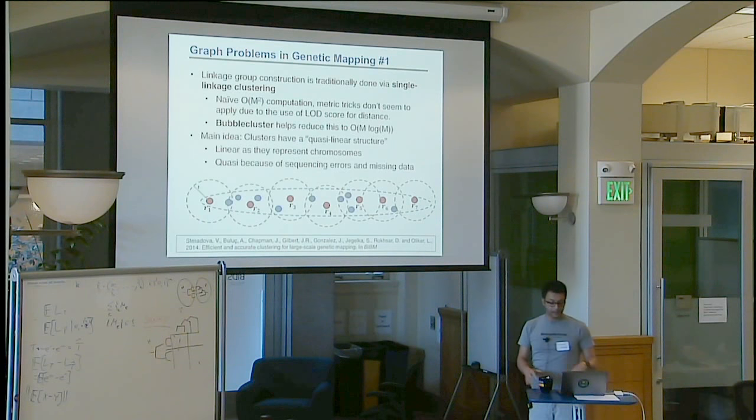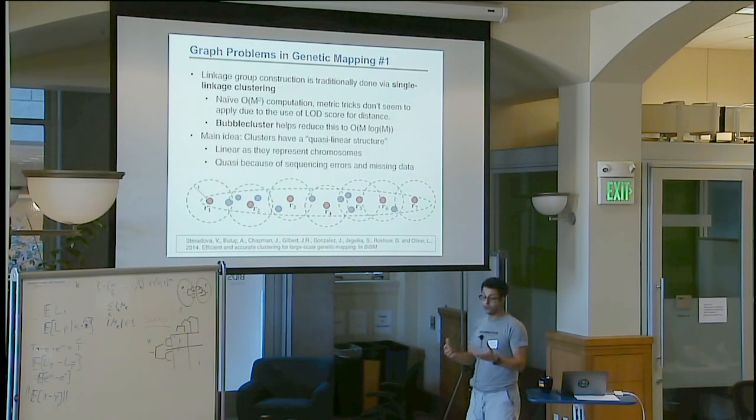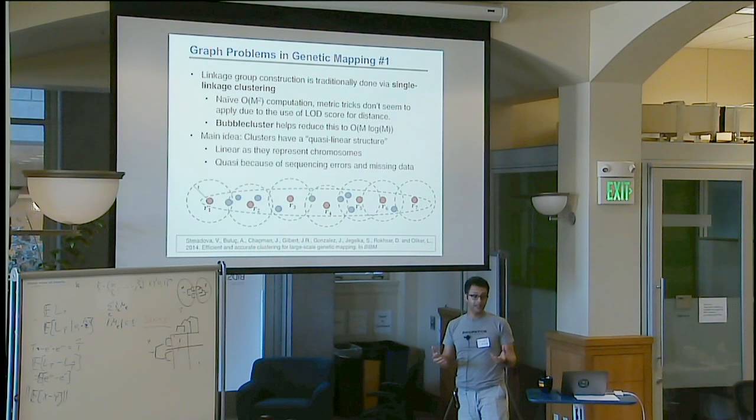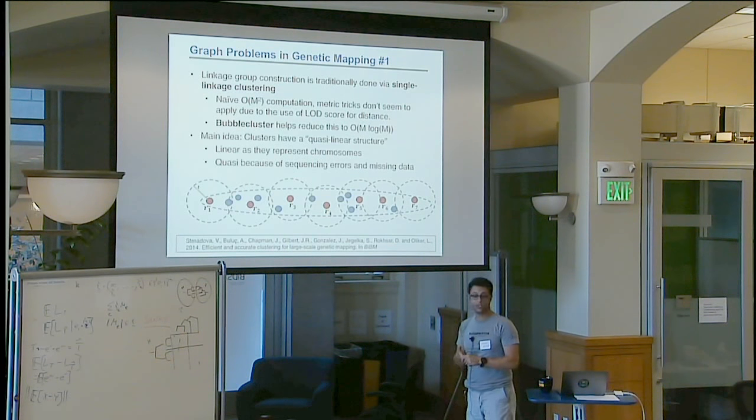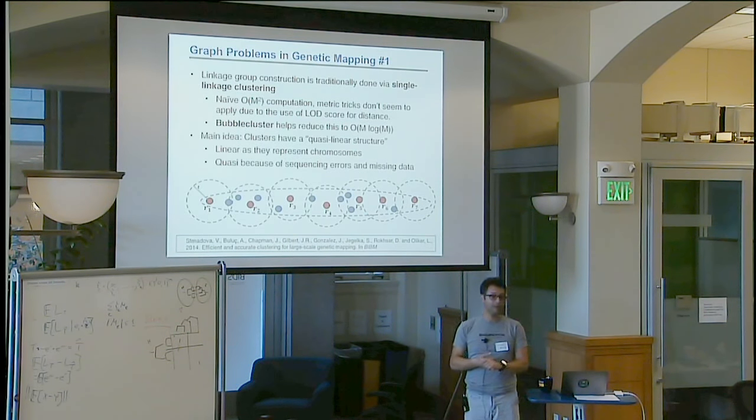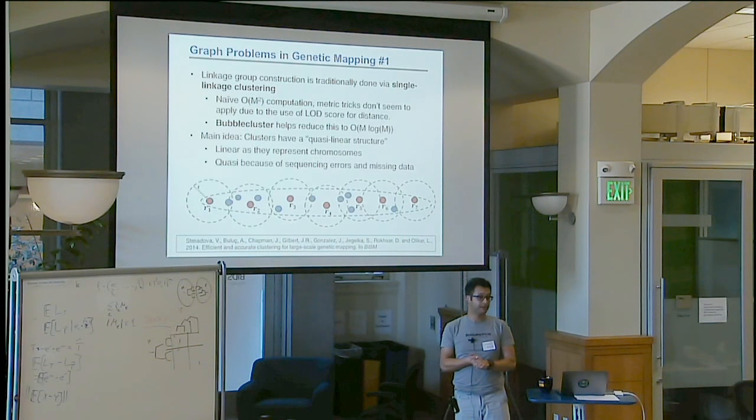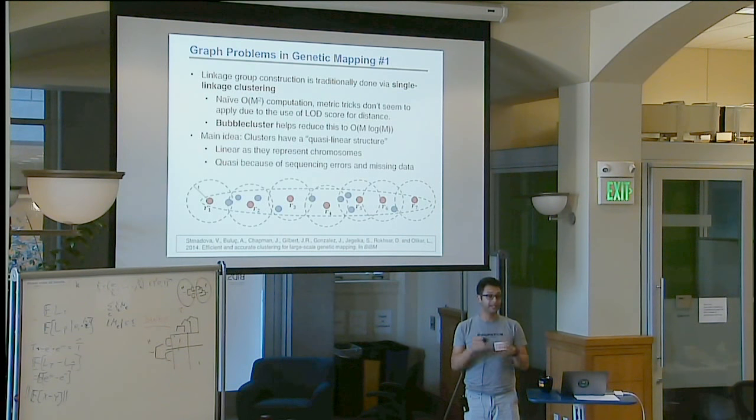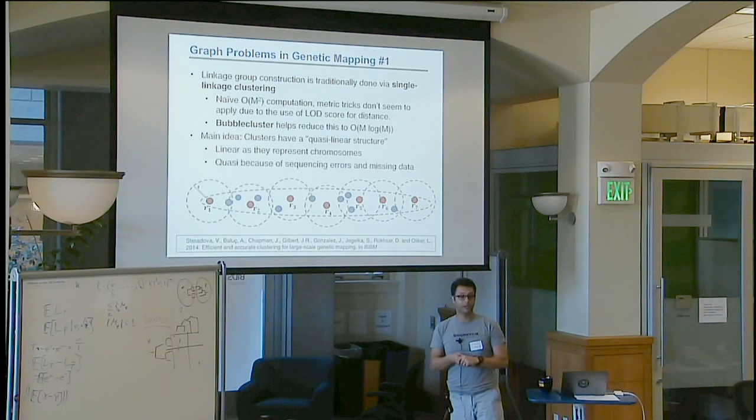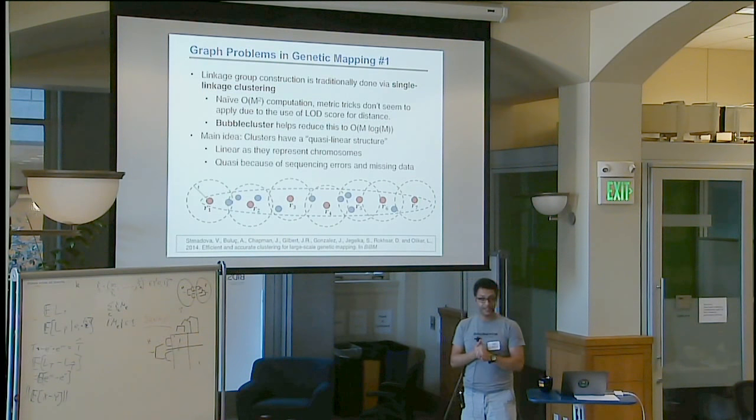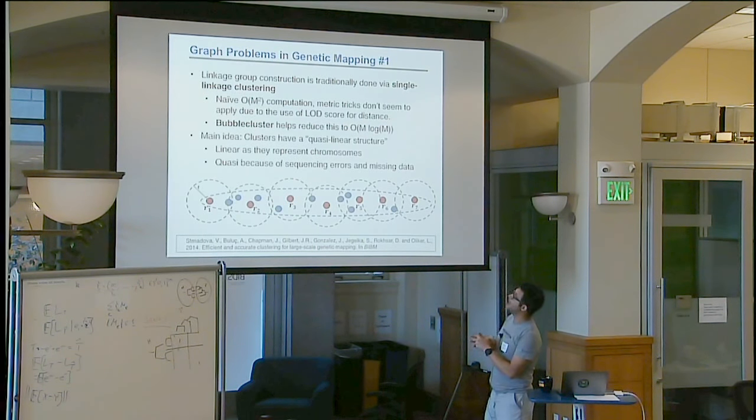So the naive first step even looks like awfully simple just to cluster these things is an M square calculation in pretty much all the software we tried. So what they do is they do every single pairwise comparison and then they do single linkage clustering after that. It works beautifully well, pretty accurate. And the single linkage clustering actually makes sense physically for this problem. Except that when you have millions of markers, this M square calculation takes an awful lot of time and you don't really need to do this.